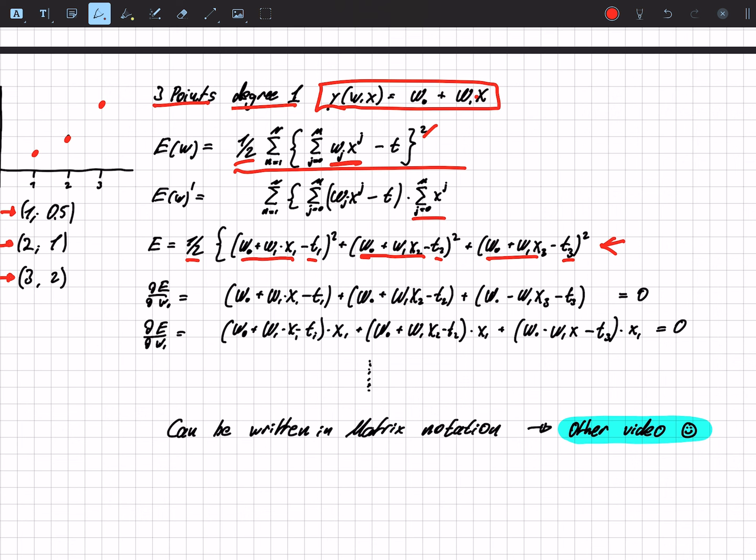So we do the same thing, we derive by w0, we get this one, and we get, if we derive by w1, we get that one. This is a fairly lengthy mathematical operation to find those two parameters.